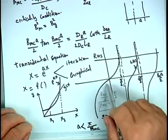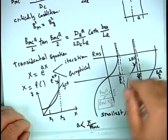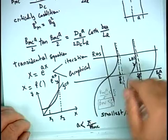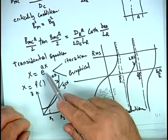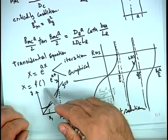When we applied these conditions, we reached a transcendental equation. A transcendental equation has the independent variable on both sides and cannot be separated — for example, x = e^(ax). You cannot isolate x from both sides; the only way to solve such an equation is by graphical methods or numerical iteration techniques.